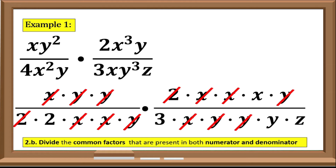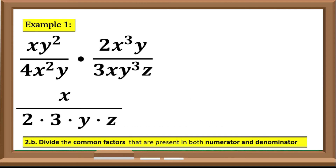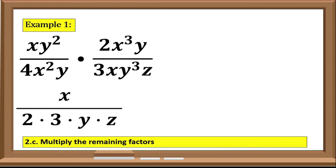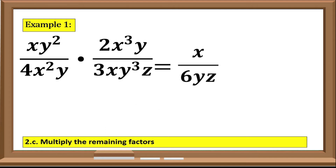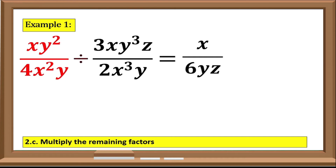Lastly, multiply the remaining factors. For the numerator, that would be equal to x. And for the denominator, we have 2 times 3 times y times z, which equals 6yz. So the quotient of xy² over 4x²y divided by 3xy³z over 2x³y is equal to x over 6yz.